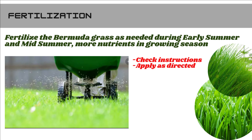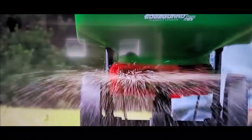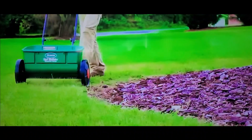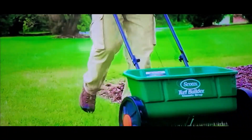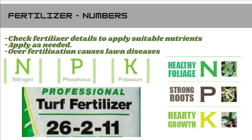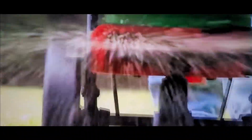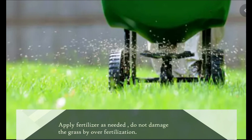The next lawn application is fertilization. Always fertilize and add lime or sulfur based on the soil. Bermuda grass lawns should receive a couple of pounds of actual nitrogen per growing season. Fertilize Bermuda grass during early summer, mid-summer, and late summer. Bermuda grass needs more nutrients in the growing season, which is summertime. Do not over-fertilize the Bermuda grass lawn — it can lead to a lawn disease called fungus.